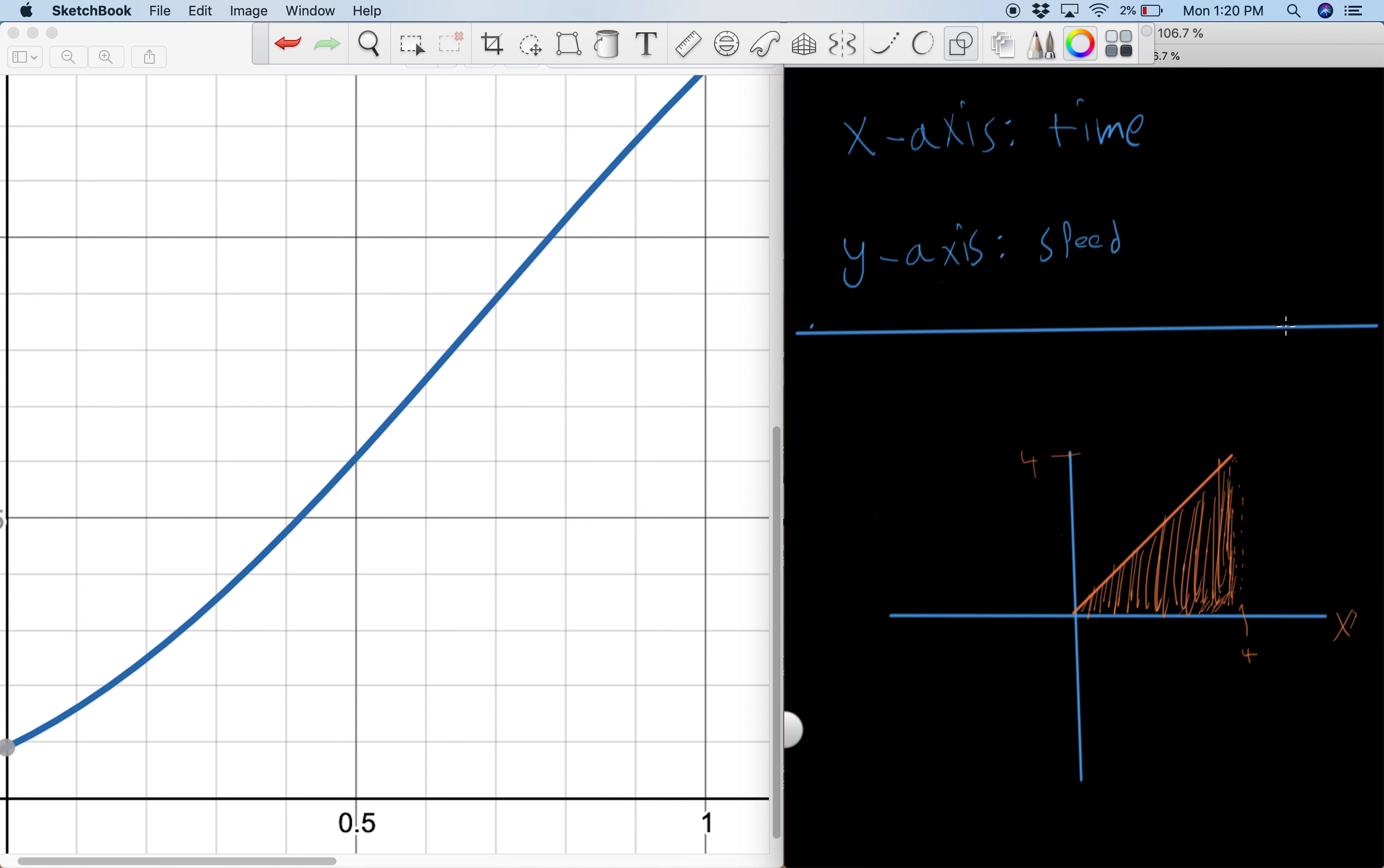And notice that with the derivative problem in the previous video, we wanted to take the derivative of a line and we actually didn't have to use calculus either. That's because it was a line, right? In this case it's a line and we don't need to use calculus again. We can just use a geometry formula for the area of a triangle. Area of a triangle is one half base times height, and the base is 4, the height is 4, so 16 divided by 2, which is 8.